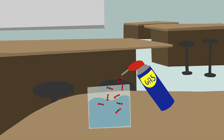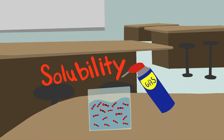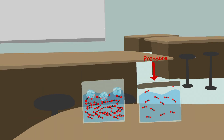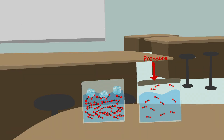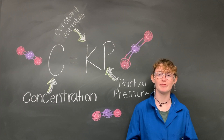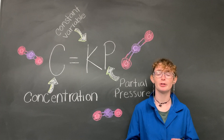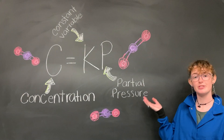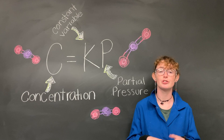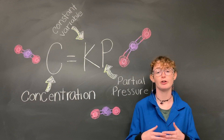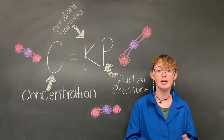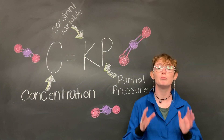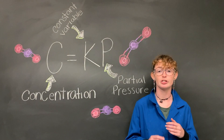The amount of gas that can dissolve in a liquid is called solubility. Solubility depends on both temperature and pressure — cold liquids are able to dissolve more gas than warm liquids. Henry's Law shows us that the solubility of gas in a liquid is related to the pressure of that gas above the liquid, so more gas gets dissolved as pressure increases. To create fizzy sodas, carbon dioxide gas is dissolved into the liquid, and then it is sealed under even more CO2.